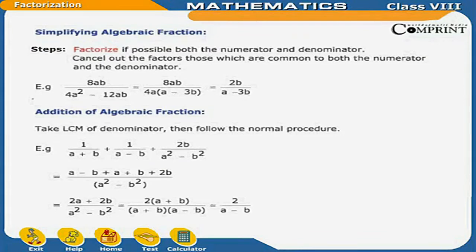For example, 8ab upon 4a square minus 12ab is equal to 8ab upon taking out 4a common, a minus 3b, is equal to 2b upon a minus 3b.